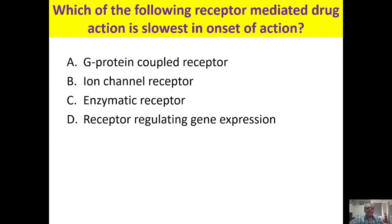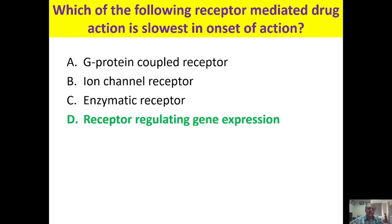Which receptor-mediated action has the slowest onset of action? Drugs act through G-protein coupled receptors, ion channel receptors, enzymatic receptors, or receptors regulating gene expression. The answer is receptors regulating gene expression, because the drug binds, triggers a cascade of reactions, then new protein synthesis is required — this takes significant time.